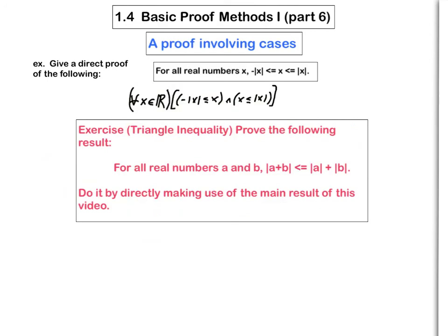I'll leave you with an exercise: the triangle inequality, a very important theorem used extensively in mathematics — particularly in Math 315. Prove that for all real numbers A and B, the absolute value of A plus B is less than or equal to the absolute value of A plus the absolute value of B. Do this by directly making use of the main result we just proved. It will likely be given as a guided practice or class activity problem to be turned in.